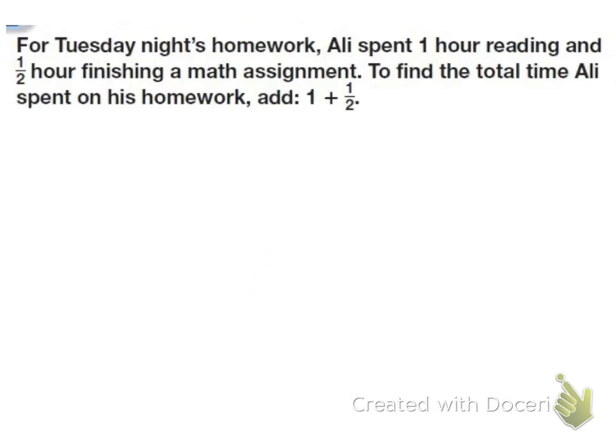Next problem. For Tuesday night's homework, Allie spent 1 hour reading and 1 and 1 half an hour finishing a math assignment. To find the total time Allie spent on his homework, add 1 plus 1 half. So we add the whole numbers and fractions together. Since I have no fraction to add to the 1 half and no whole number to add to the 1, that means I just combine this together into a mixed number. So I end up having 1 and 1 half hours.